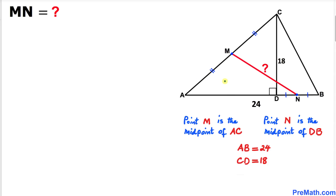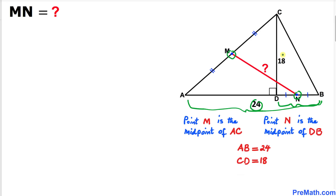Welcome to pre-math. In this video lesson we have a triangle ABC such that point M is the midpoint of line segment AC, and point N is the midpoint of line segment DB. Furthermore, line segment AB is 24 units and line segment CD is 18 units. We are going to calculate the distance MN.